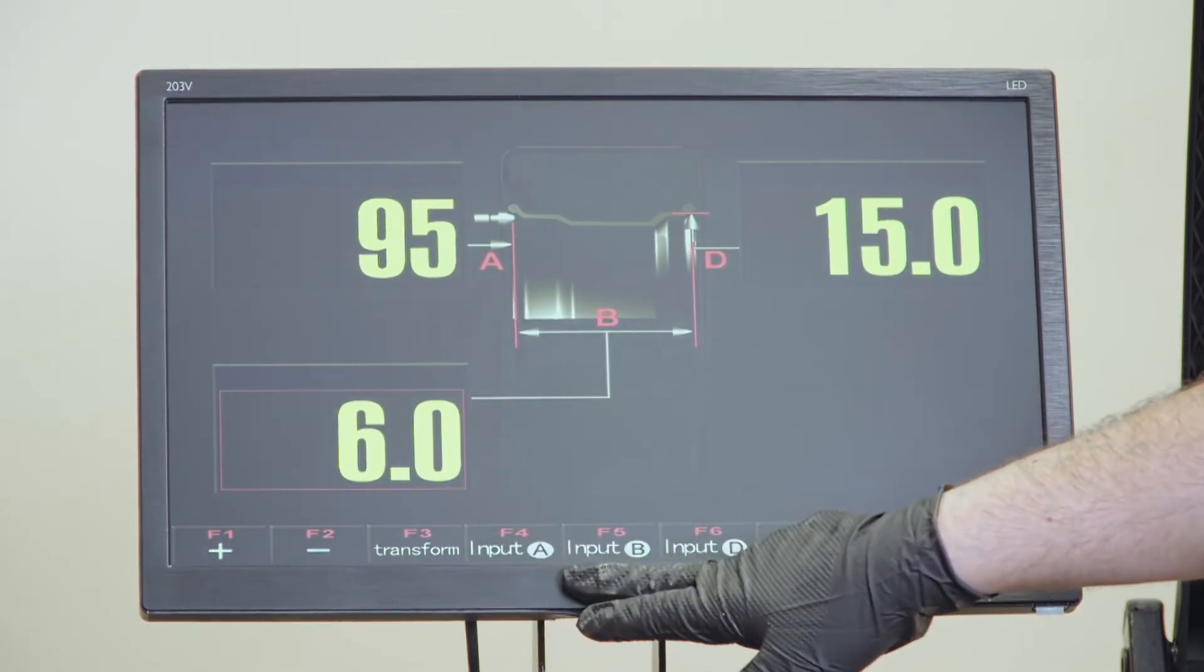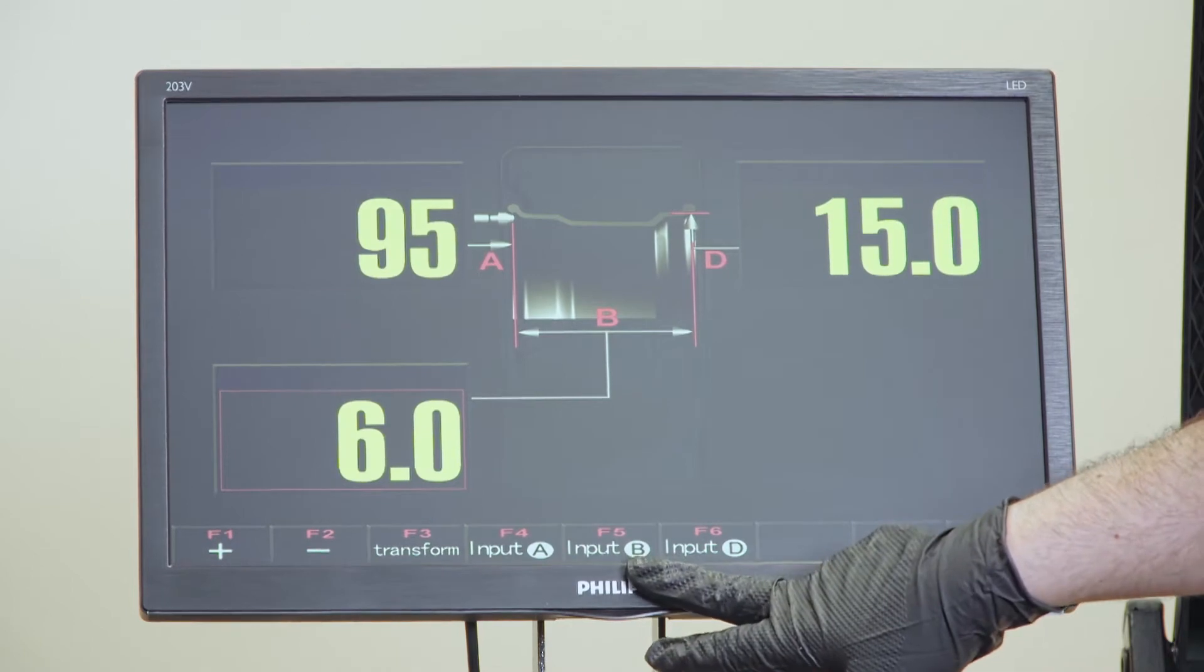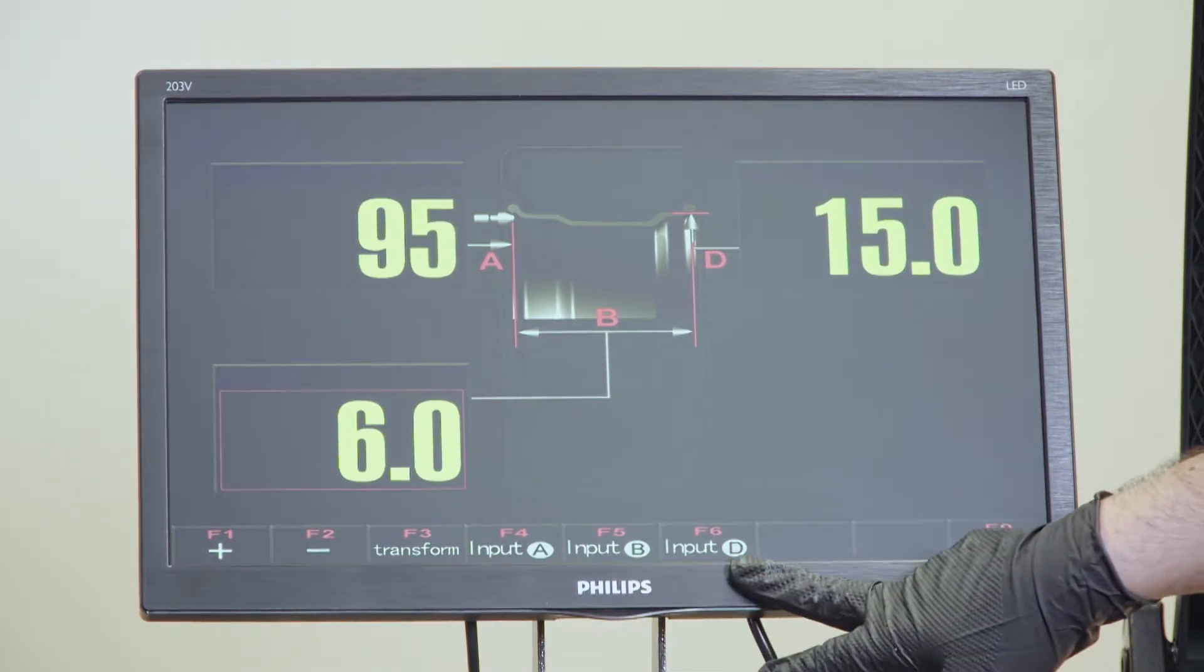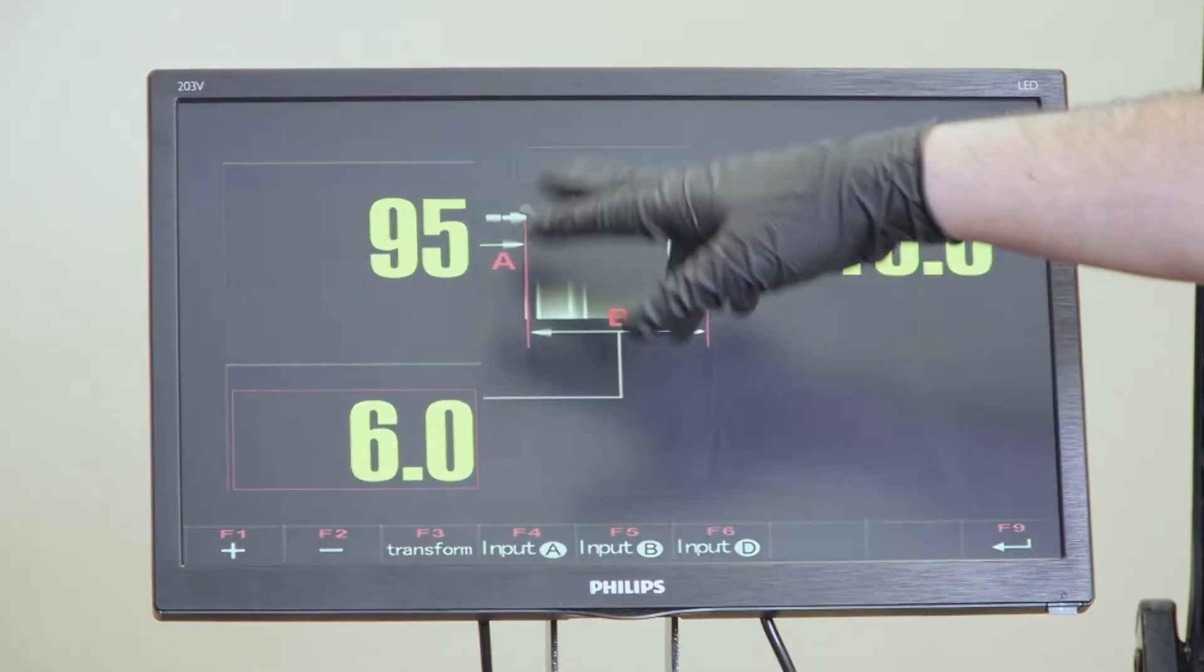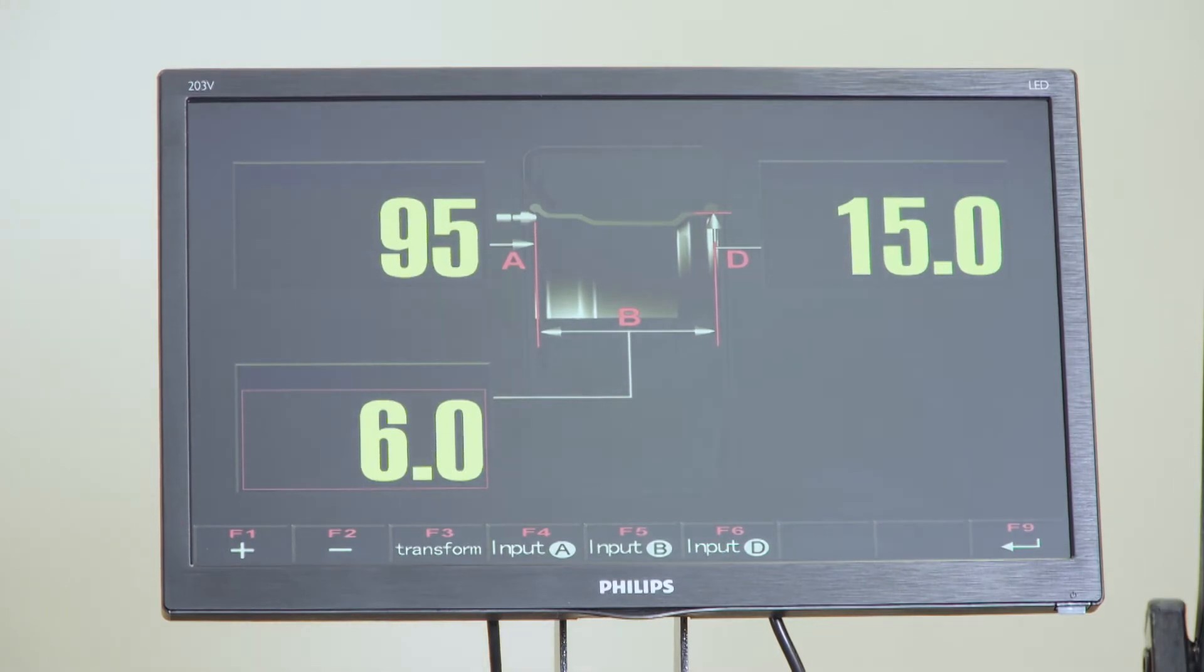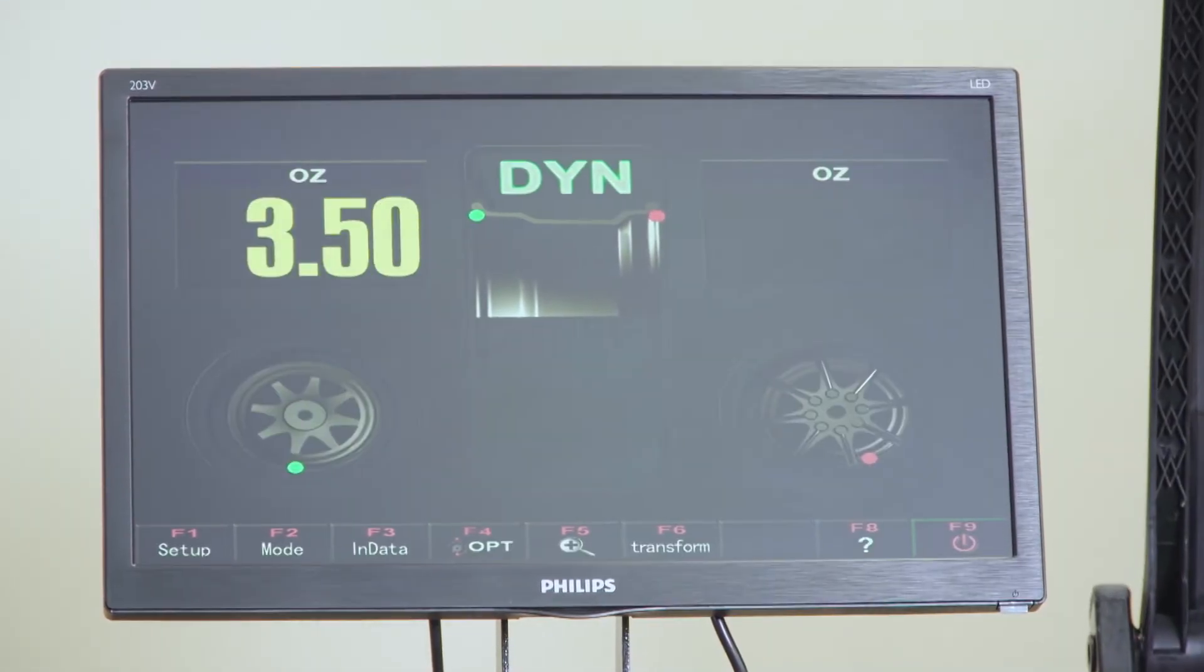F4 is the distance. F5 is the width. F6 is the diameter. So you can manually adjust all three. F9 after you did your data input.